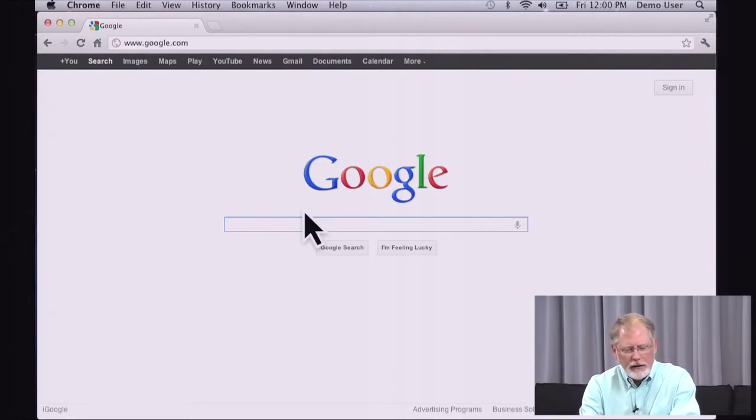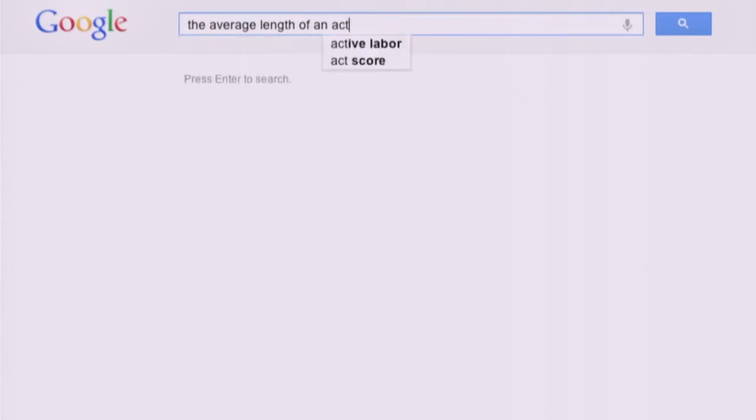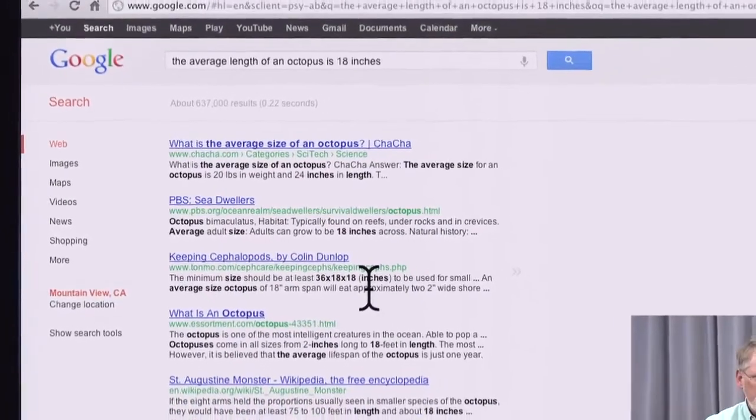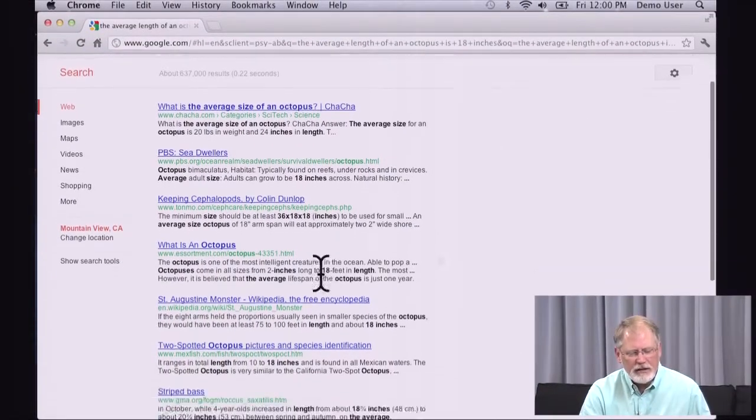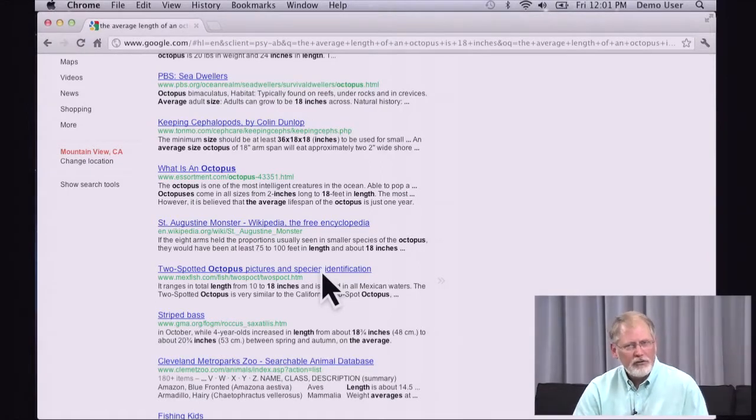If I do a query like the average length of an octopus, 18, you get some very nice looking results here. And in fact, the very first one, you see 20 pounds in weight and 24 inches in length. But then the second result says, if you look in the snippet, 18 inches across and a little bit farther down, 36, 18 by 18, what I see people doing in a common failure mode for them is that they will scan these initial results, find the thing that they were asking about, in this case 18 inches, and think that their hypothesis is confirmed.